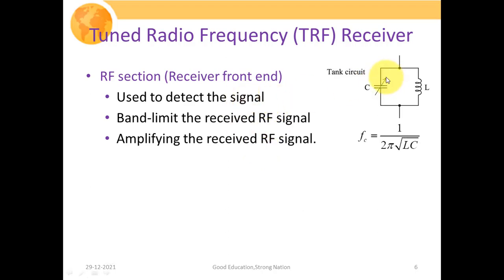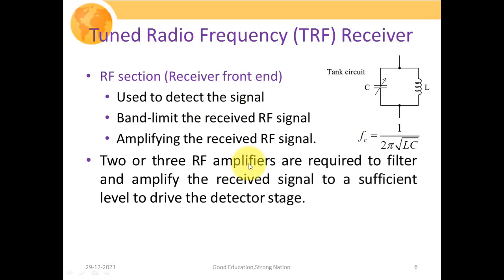This RF section consists of a tuned circuit, which is a tank circuit having an inductor and variable capacitance. When we vary the capacitor value, the resonance frequency — given as 1 divided by 2π√(LC) — will alter accordingly, allowing us to select a specific frequency region. Two or three RF amplifiers are required to filter and amplify the received signal to a sufficient level to drive the detector stage, using multi-stage amplification to enhance the signal to an optimum level.